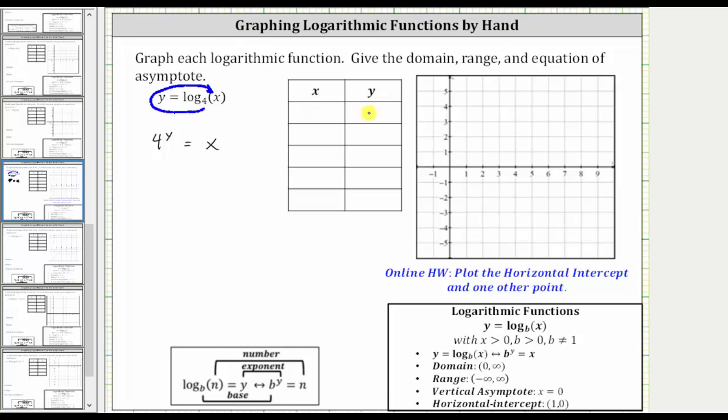I do want to make a note, in the online homework, you only have to find the horizontal intercept and one other point. But for this explanation, we will complete the entire table of values.